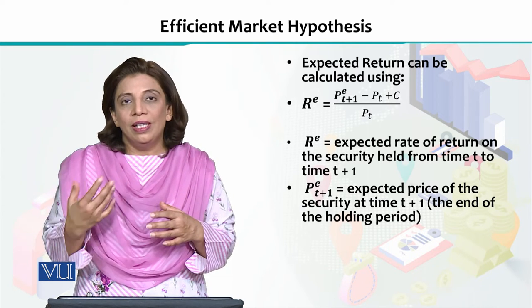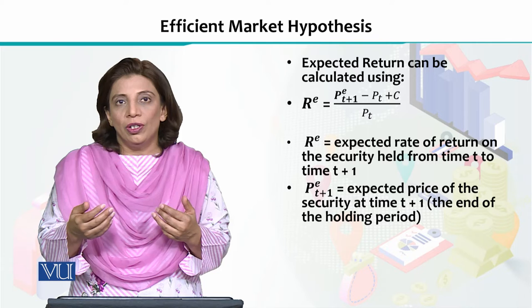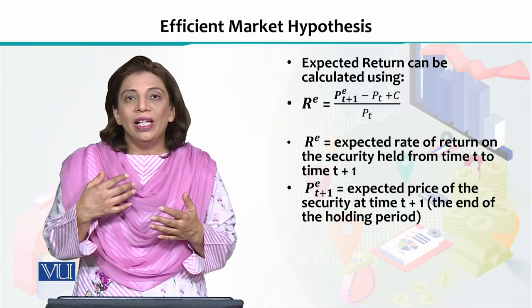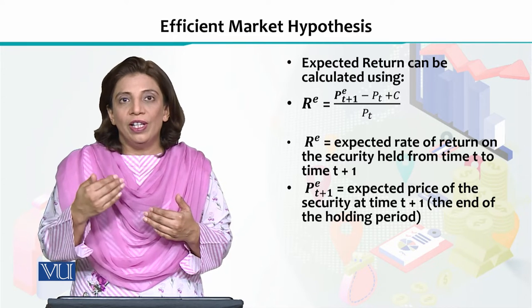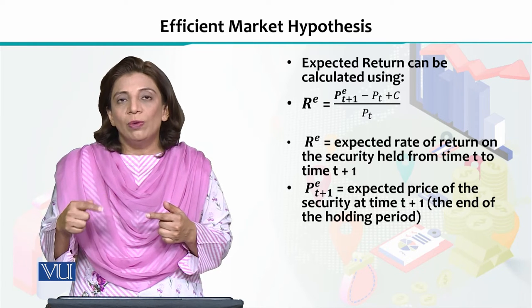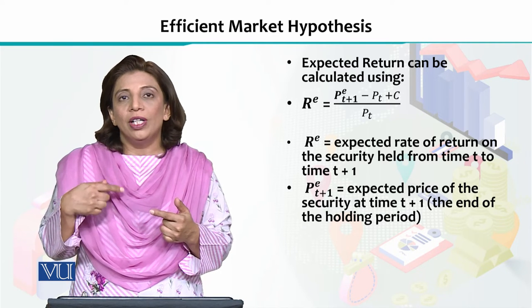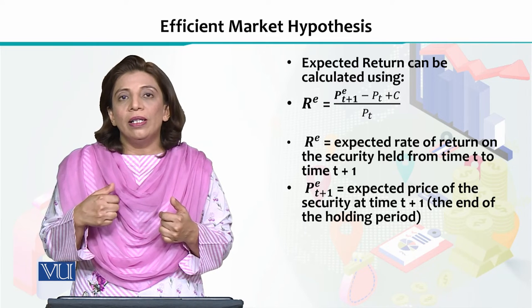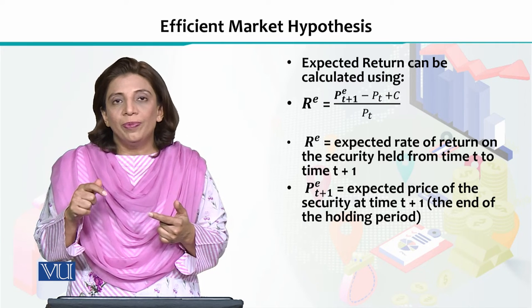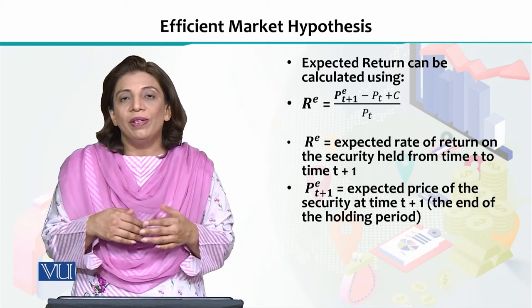Similarly, using the same formula, we can find out the expected returns — that is, what return we are expecting in future. To calculate the expected return, we take into account the expected future price of that security. You can see there is a superscript E at the top of P T plus 1, meaning we are now talking about the expected future price. We subtract the current price and add the cash payment, dividing the whole thing by P T.